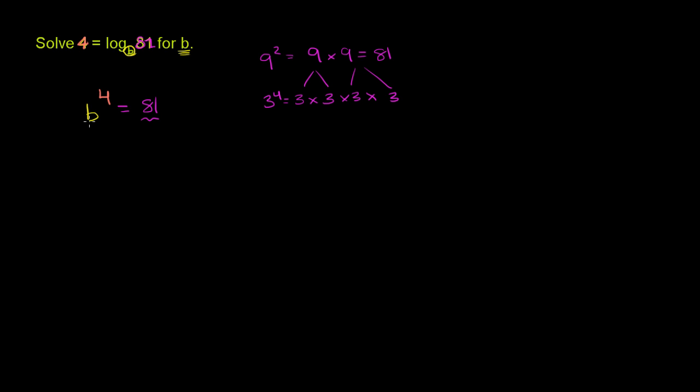9 squared is the same thing as 3 to the fourth power. So there we've done it. Some number to the fourth power equals 81. We know that 3 to the fourth power equals 81, so b is equal to 3. Or we could say log base 3 of 81 - this is saying, what power do I have to raise 3 to to get 81? Well, we know you have to raise 3 to the fourth power to get to 81.